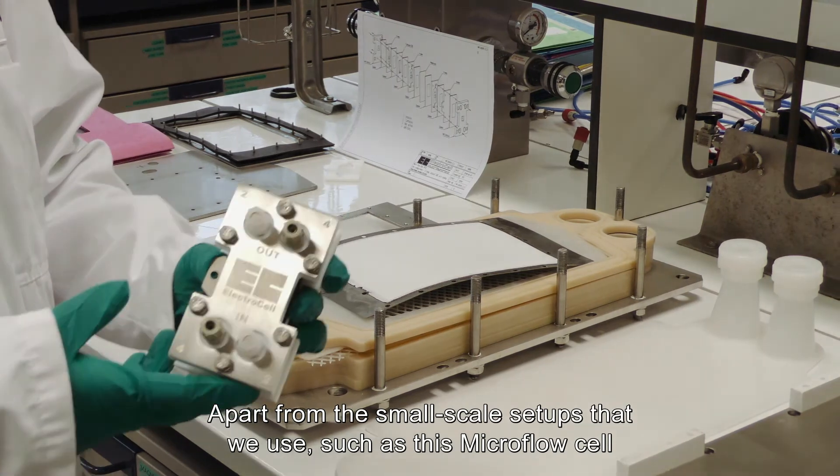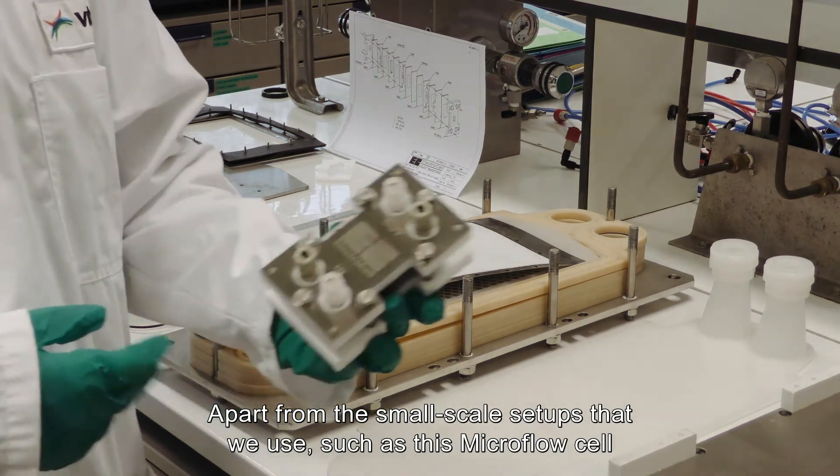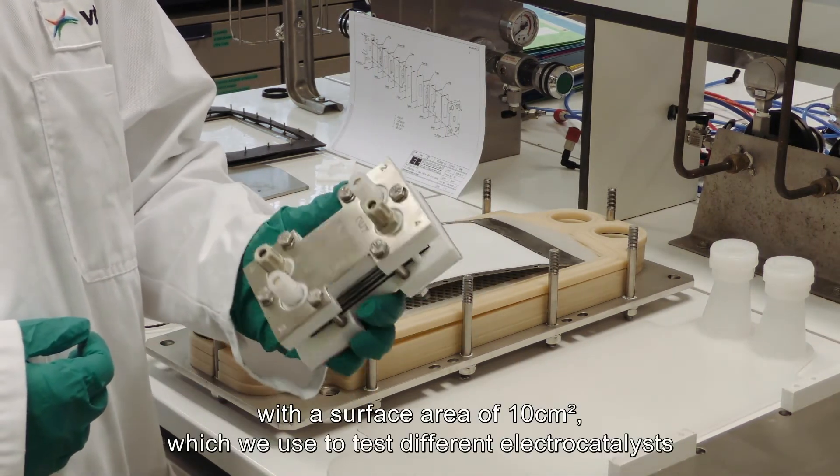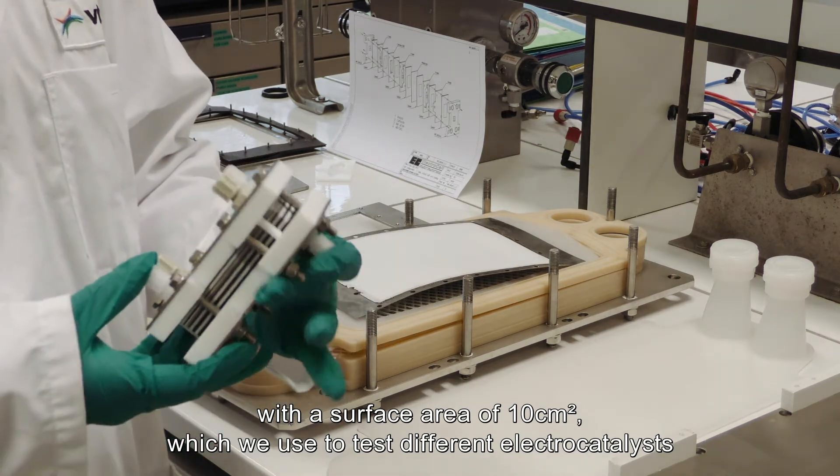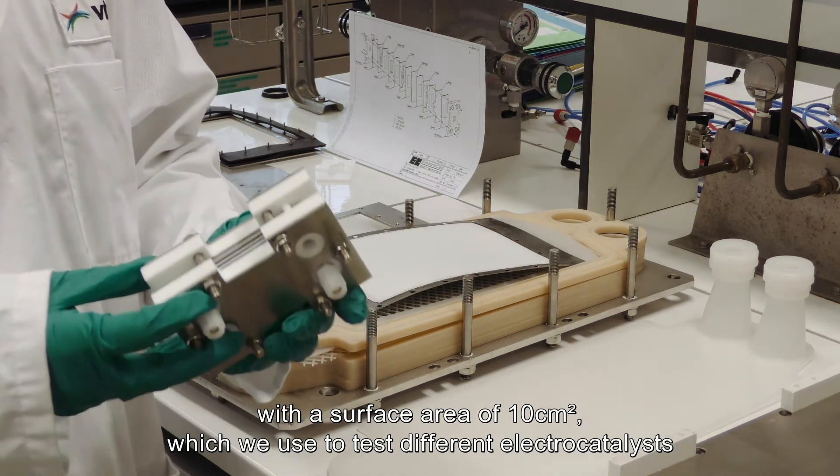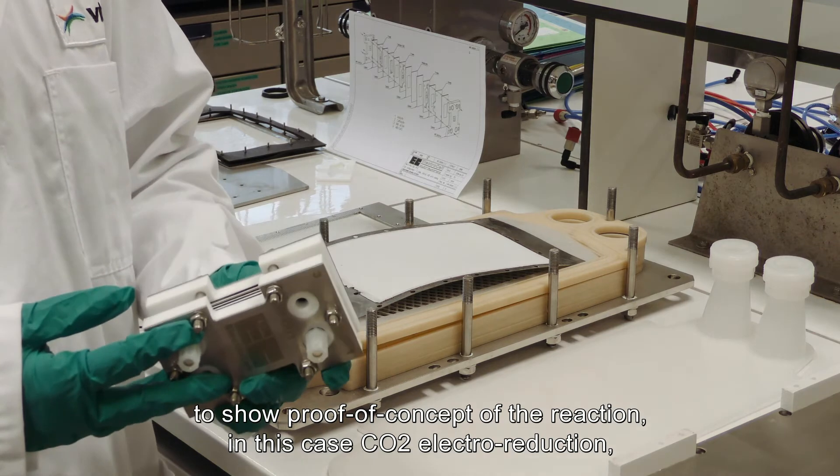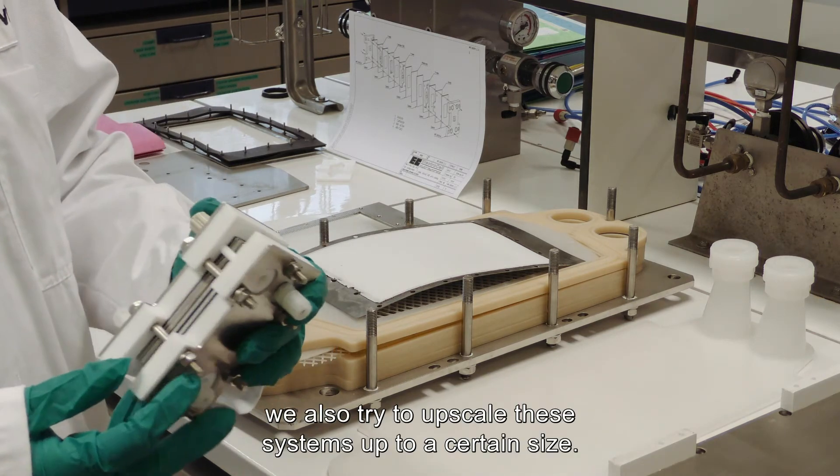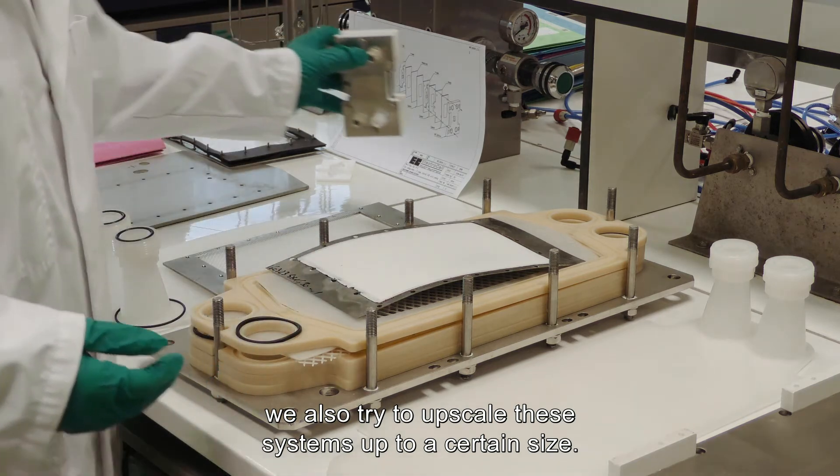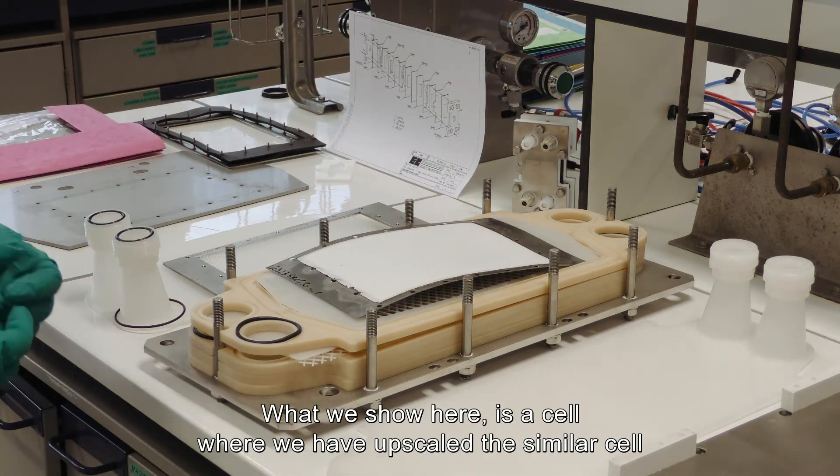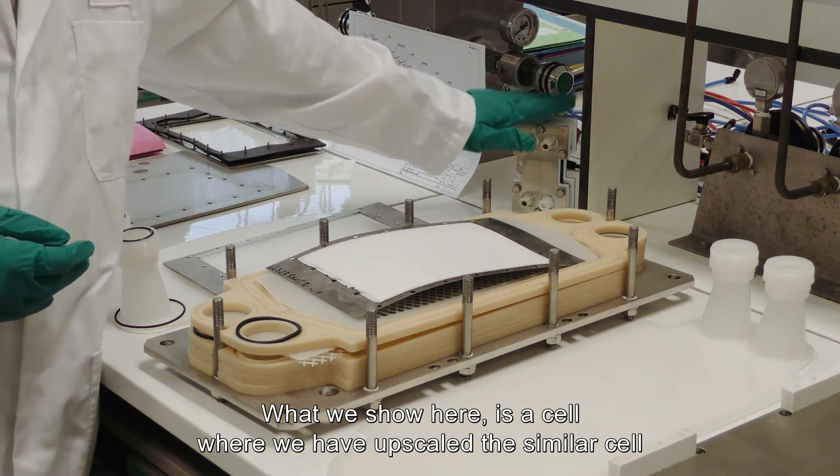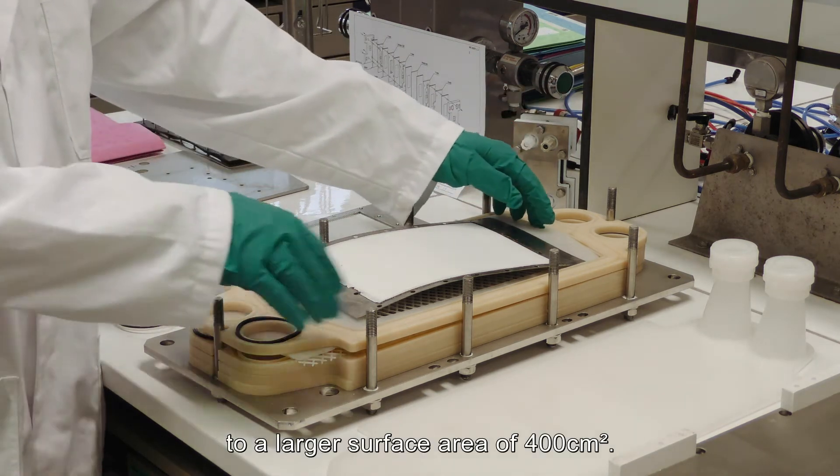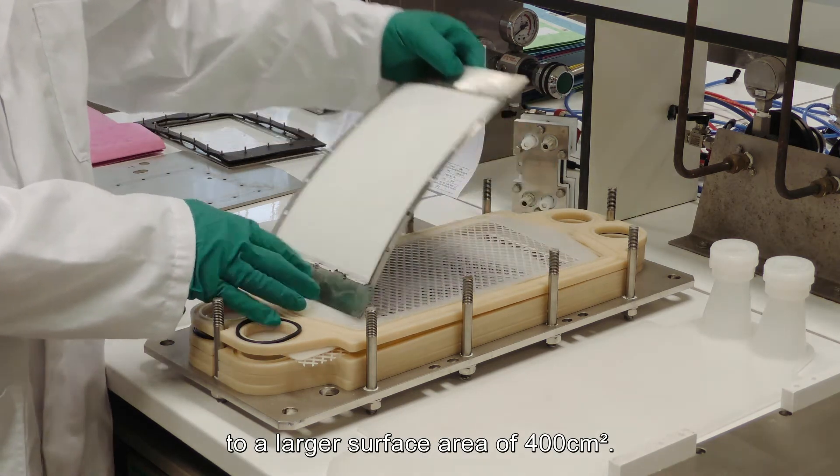Apart from the small scale setups that we use, such as this micro flow cell with a surface area of 10 cm² which we use to test different electro catalysts or show proof of concept of the reaction, in this case carbon dioxide electro reduction, we also try to upscale these systems up to a certain size. In this case what we show here is a cell where we have upscaled the similar cell up to a larger surface area of 400 cm².